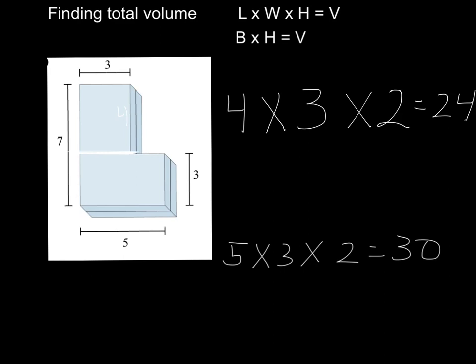Now to find our total volume, we need to add 24 plus 30. And our answer is going to be 54. And we have to always label it. So volume here equals 54. And these are in centimeters, so it's going to be centimeters cubed. And we always have to remember with volume, we have to label it cubed.